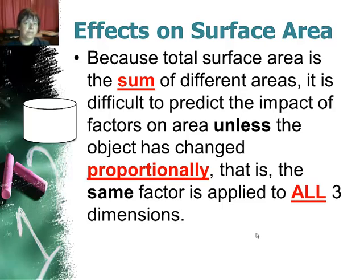Now the surface area of solids is a little more complicated than the surface area of just a 2D shape because it has three different dimensions, and because I'm adding, say for example in the cylinder, the two bases and the lateral surface area, it's difficult to determine what the impact could be. For example, if I stretch this I didn't really change the base shape so that part of the area stays the same but the other one grew. The only way I can really predict this easily is if the area has changed proportionally.